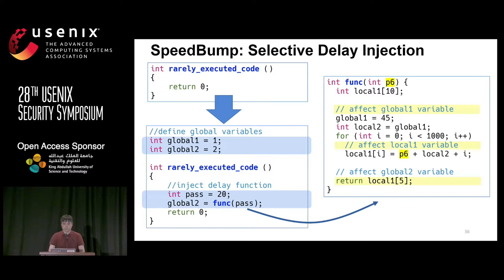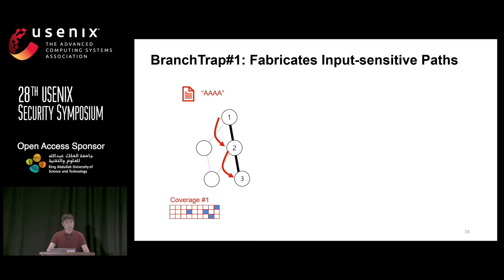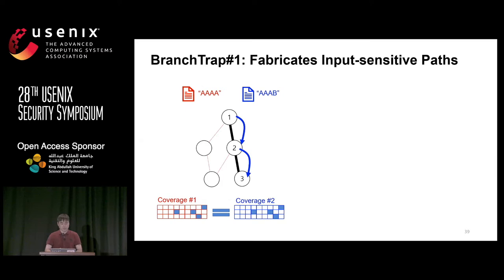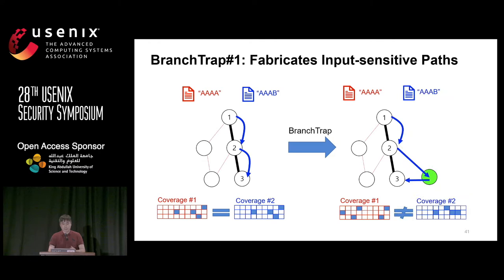Now let's move on to the second component, branch trap, which hinders coverage management. Branch trap number one fabricates input-sensitive paths. For a given input following control flow 1, 2, and 3, a slightly mutated input follows the same path — so the fuzzer discards the second input as unimportant. However, after applying branch trap, the first input visits a fake path between nodes 1 and 2, and the second input visits another fake path between nodes 2 and 3. Now the fuzzer thinks both inputs are important and keeps both, wasting valuable time.